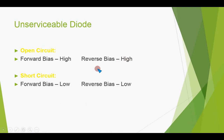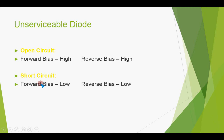If the diode has shorted, in forward bias the resistance will be very low and in reverse bias the resistance will also be very low. The difference from a serviceable diode is in the beep indication: a serviceable diode in forward bias produces a very brief beep, but when the diode is shorted, the multimeter creates a long continuous beep for as long as the terminals are connected.